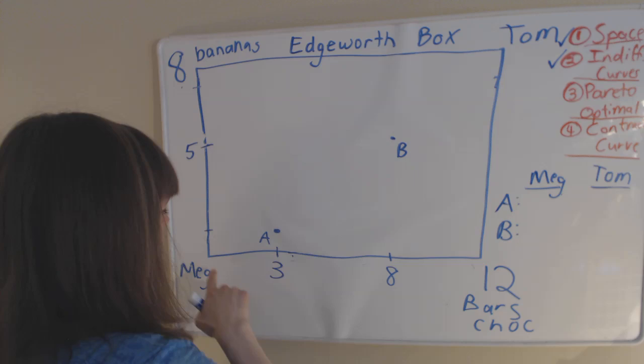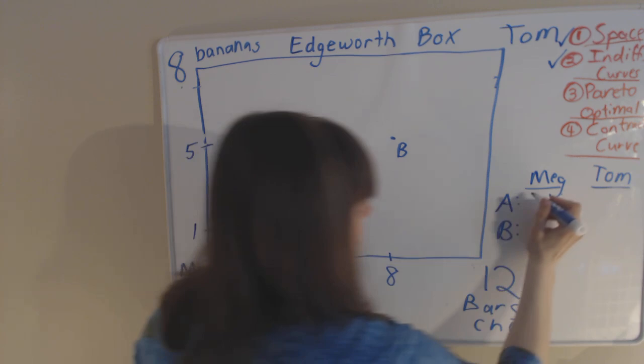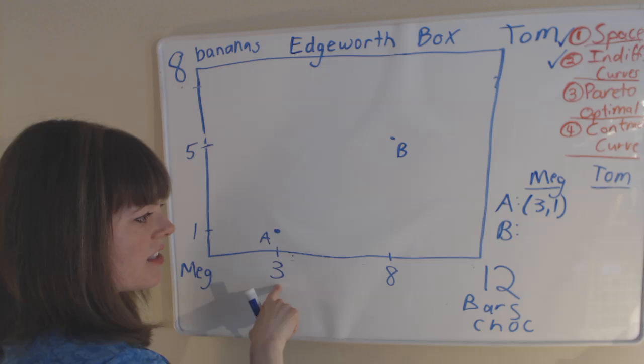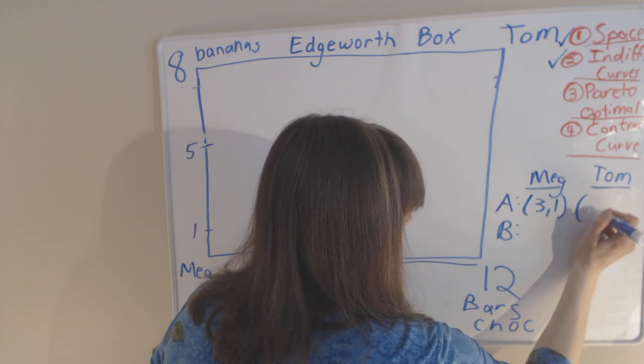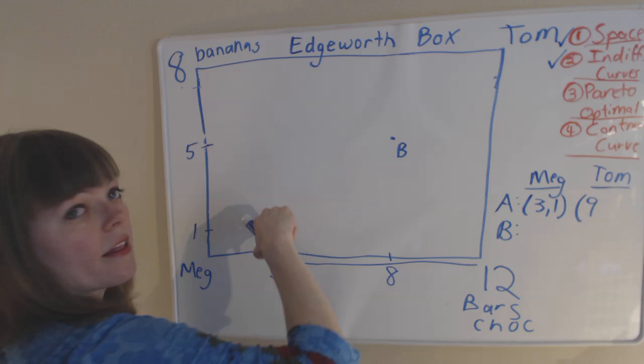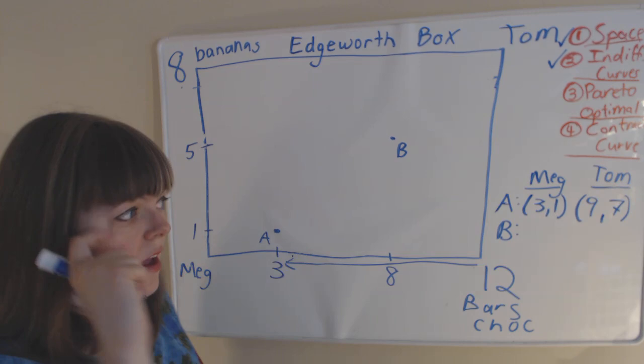So from Meg's perspective, point A gives her three bars of chocolate and one banana. So for Meg, that point is three one. For Tom, however, she gets three bars of chocolate, and he gets the remaining nine bars of chocolate. So for him, that point represents him getting nine bars of chocolate. And he gets seven of the eight bananas. So for him, that point is nine seven. And let's do another example.